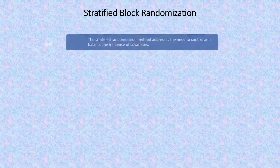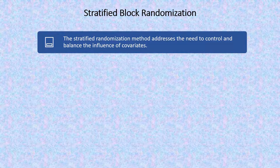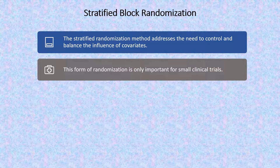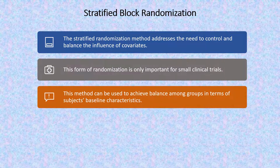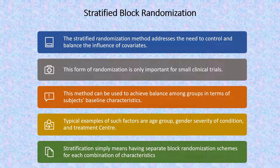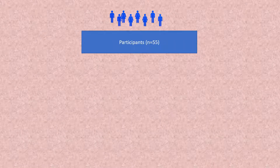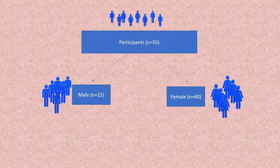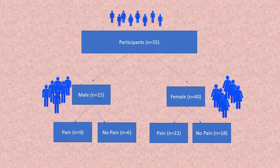Stratified block randomization addresses the need to control and balance the influence of covariates. This form of randomization is especially important for small clinical trials. It can be used to achieve balance among groups in terms of subjects' baseline characteristics, such as age group, gender, severity of condition, and treatment centers. Stratification means having separate block randomization schemes for each combination of characteristics. For example, in a study where treatment effect is expected to differ by gender and presence or absence of pain, participants are stratified first by gender, then by presence of pain.